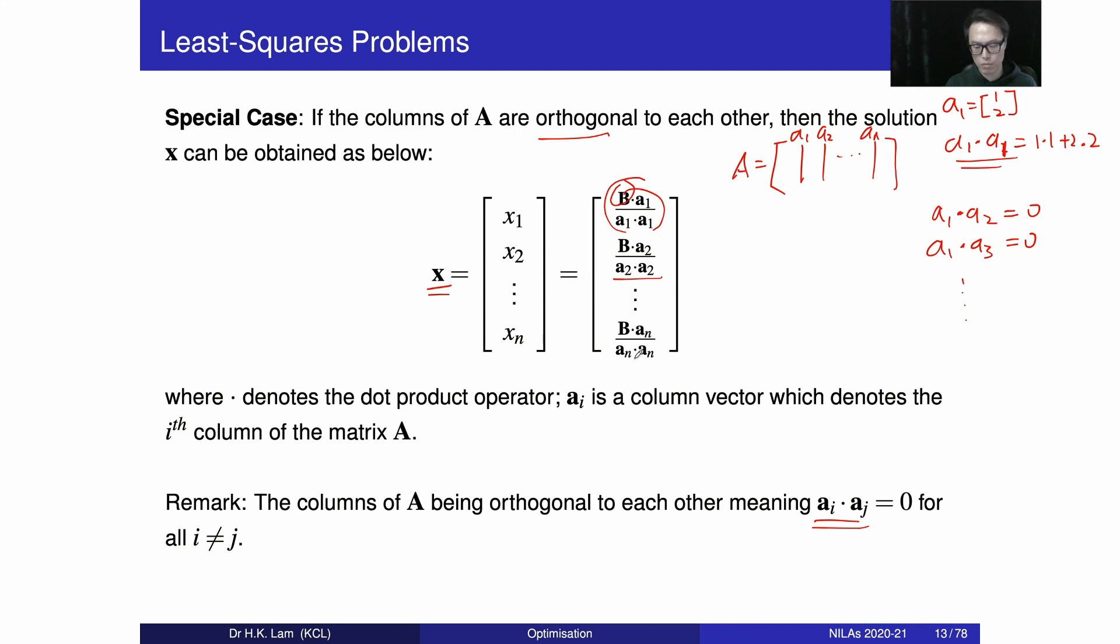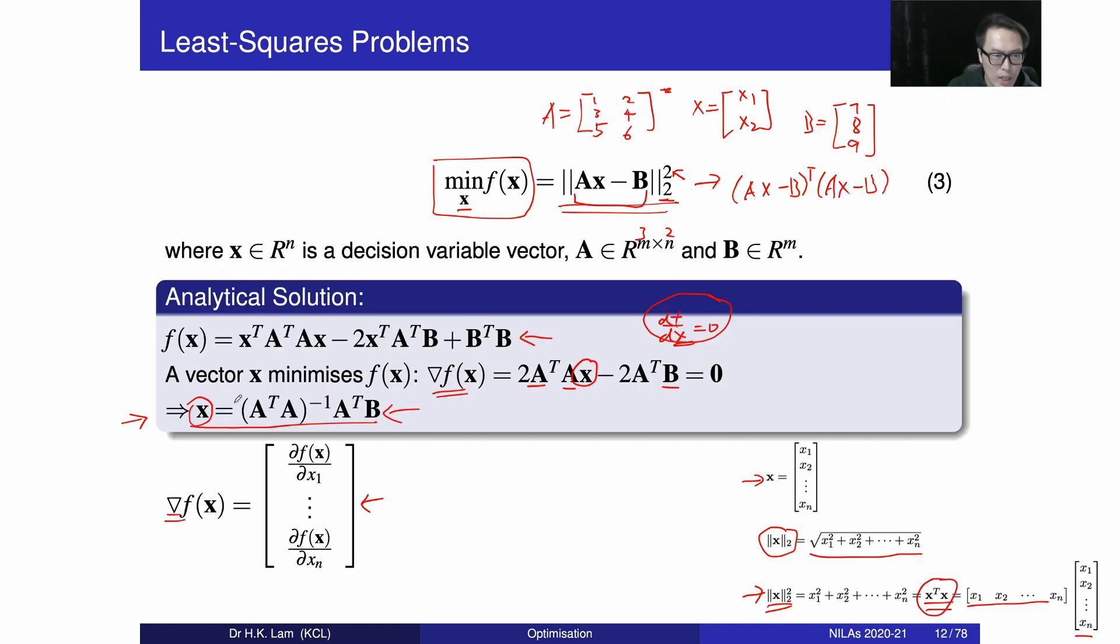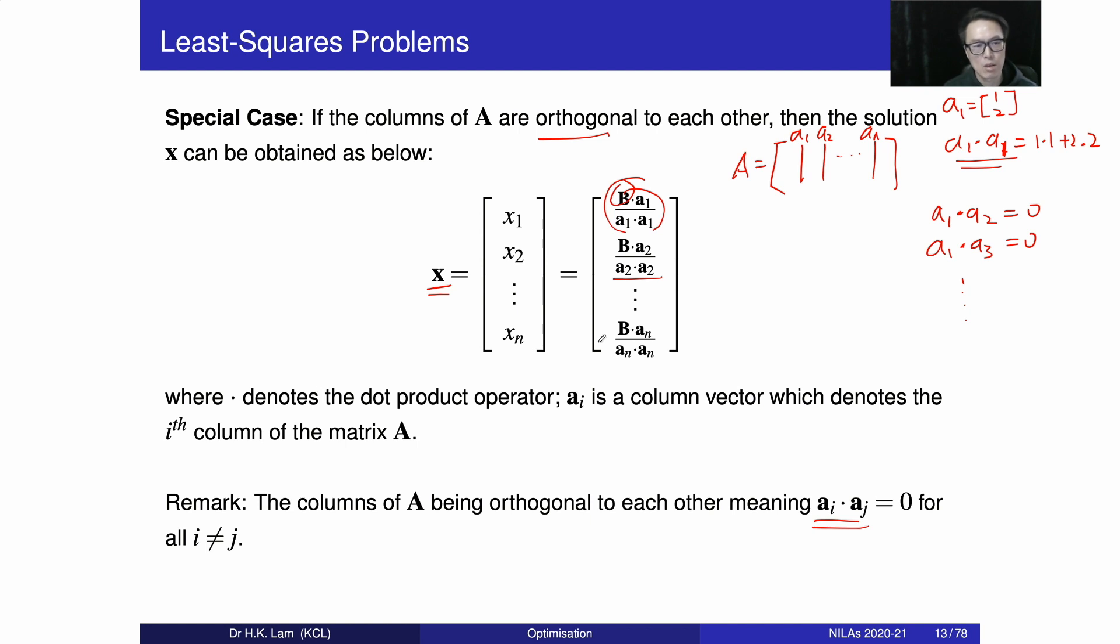So that means, the reason why we apply this special case is when A is very large, then we can just simply find the solution column by column. But for this one, when A is a very large matrix, then we have to do inverse. The computational demand is quite high in that case. So again, this only applies when A, the columns of A, are orthogonal to each other. Otherwise, we cannot apply this method. This is the least squares problem.